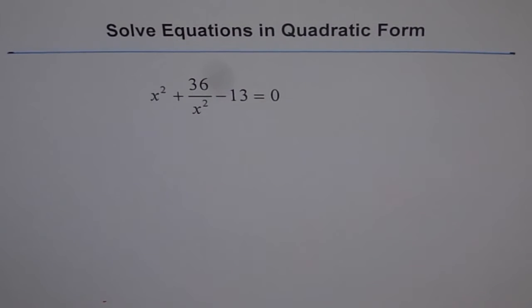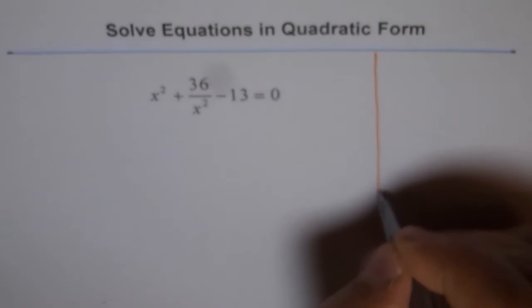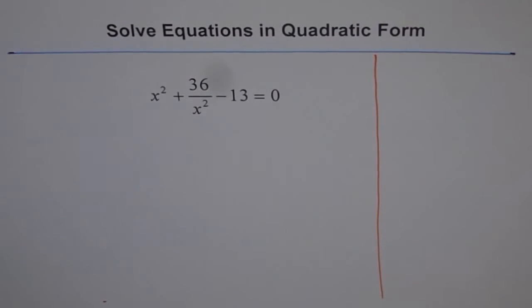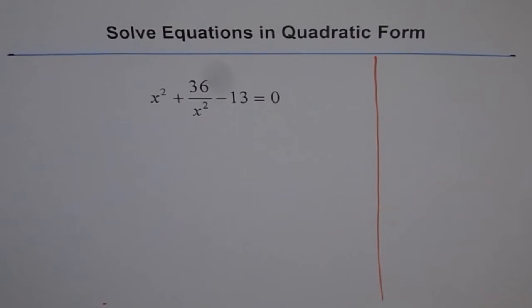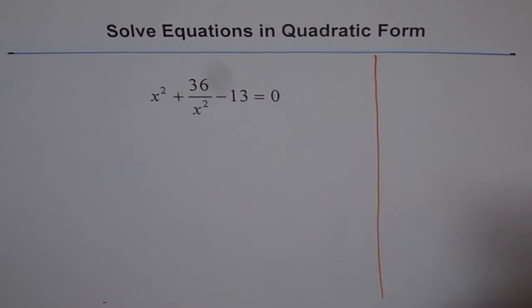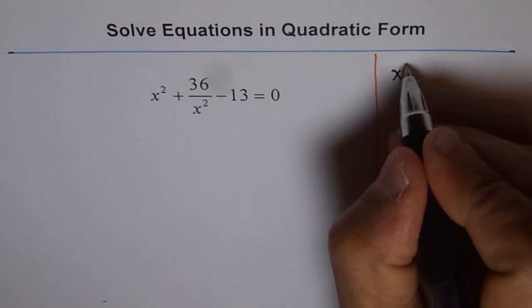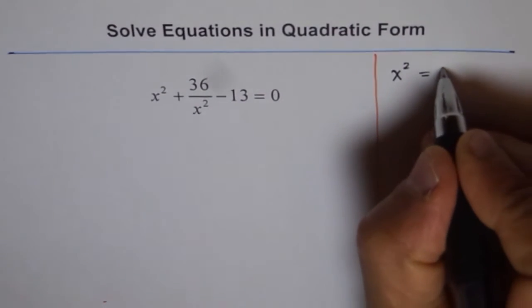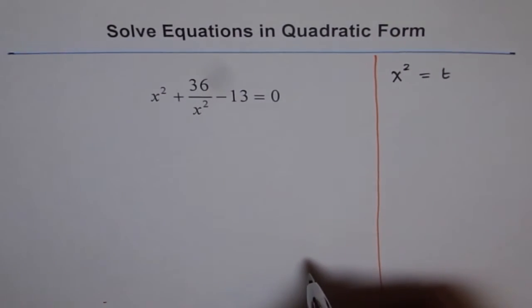So, we can do some substitution and write it in quadratic form. Let me show you that. That's our right-hand column, which I'm going to use as a rough one. What I will do is substitute x squared as, let's say, t, okay? And then see what happens.